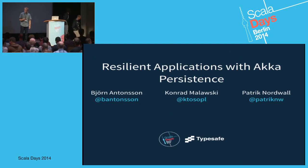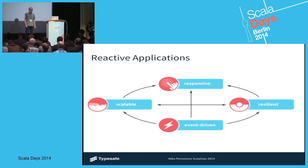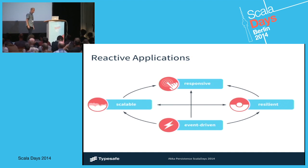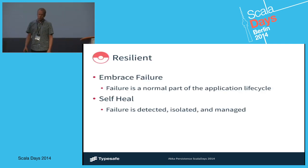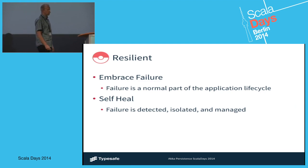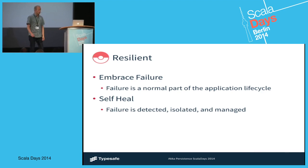Everybody is now talking about reactive applications, and there are four base traits of being reactive: responsiveness, scalability, being event-driven, and being resilient. But what does it really mean to be resilient? To be resilient, you have to embrace failure. Failure is part of the application life cycle — you know that things will fail. And if they fail, you have to self-heal: you detect failures, you isolate them, and you manage them.